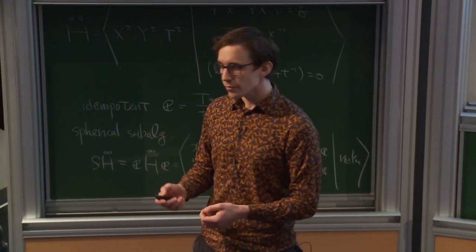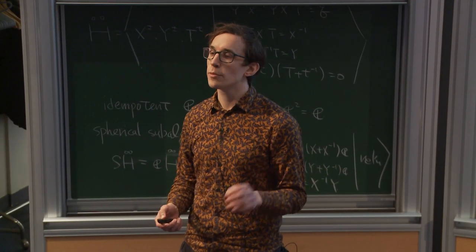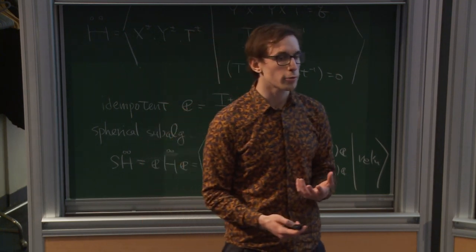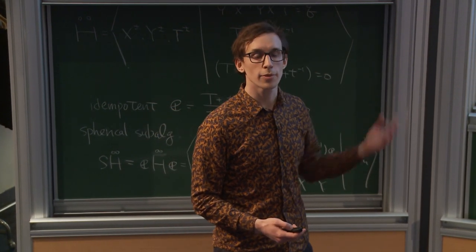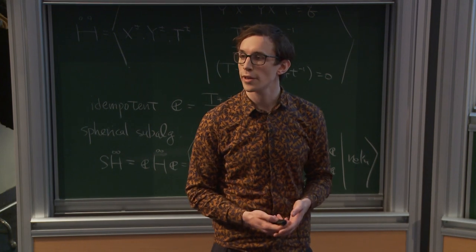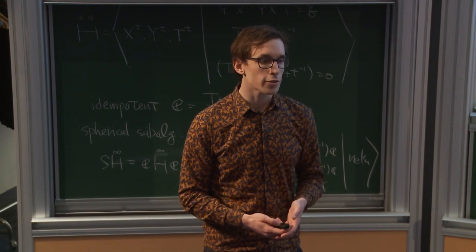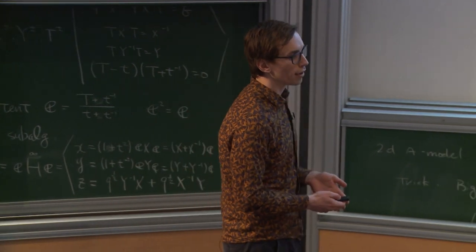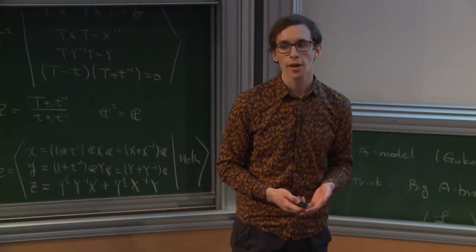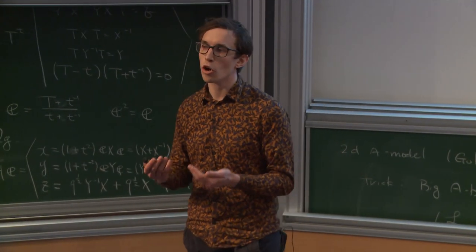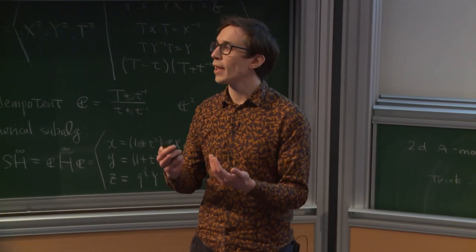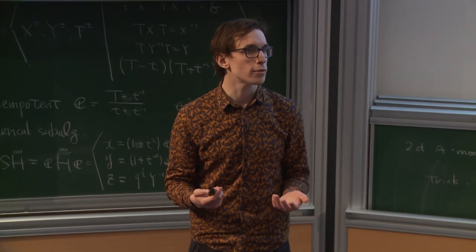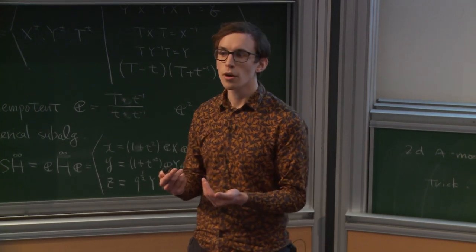We're specifically talking about framed quotients. What does it mean for M to be framed? It just means we've fixed a trivialization of the tangent bundle. Now you might wonder: what is a framing of a global quotient? If you think about the orbifold in terms of the equivariant geometry of M, that should be an equivariant trivialization of the tangent bundle of M.